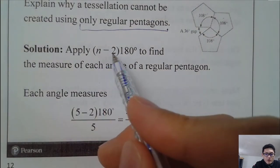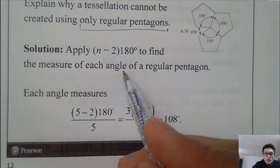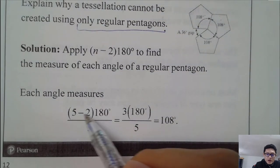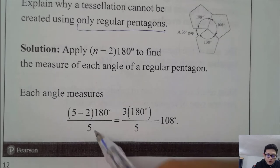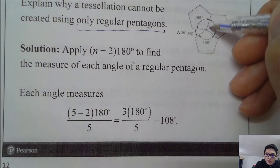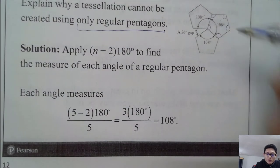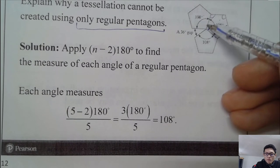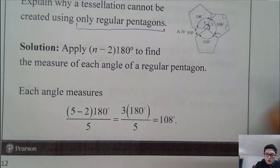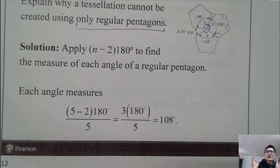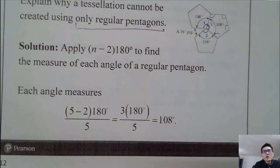The requirement is that all angles at each vertex must sum to exactly 360 degrees. With three pentagons, each having 108 degrees, we get 108 × 3 = 324 degrees — not enough for 360. We still have a gap in between, so regular pentagons alone cannot form a tessellation.